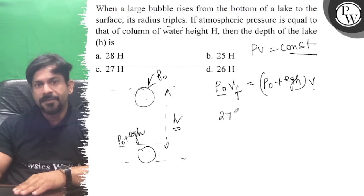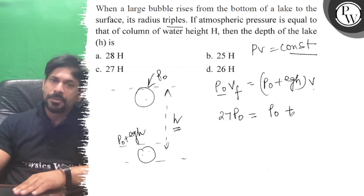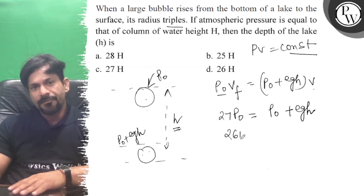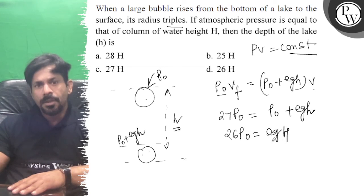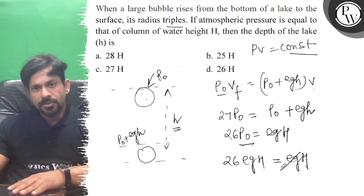So 27 of P₀ is equal to P₀ plus ρgh, right? So here 26 of P₀ is equal to ρg capital H, where capital H is the height of the column of water.